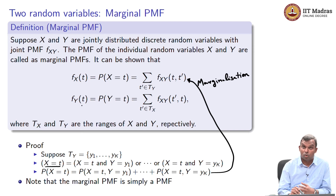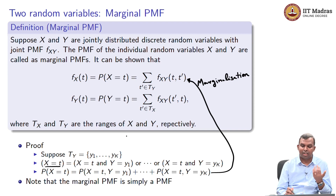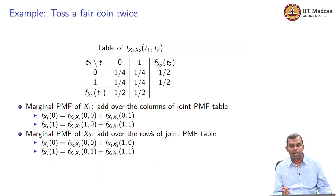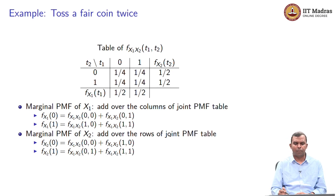The marginal PMF is uniquely defined once you define the joint PMF. It is simply a PMF with its own range, and you can calculate it from the joint PMF through this marginalization process. Let us see a few examples to see how marginalization works. It is easiest to think of the table and do the marginalization with respect to the table.